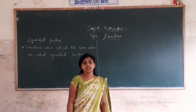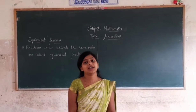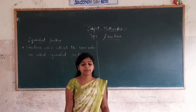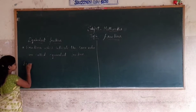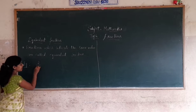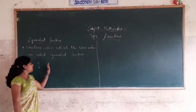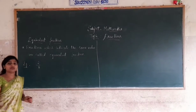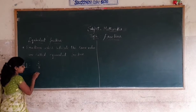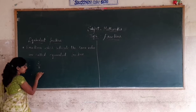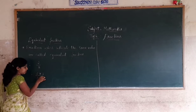To find equivalent fractions, you may multiply both the numerator and denominator by the same number. Take 2/3 as an example. Here, 2 is multiplied by 2 and 3 is multiplied by 2, because 2 is the numerator and 3 is the denominator.